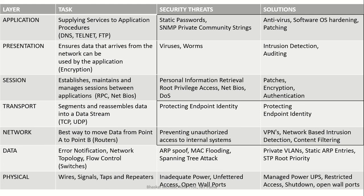Here you can see in a bit more detail the OSI model layers with their tasks, security threats, and solutions. The application layer provides services to application procedures like DNS, Telnet, FTP, etc. Security threats here include static passwords and SNMP private community strings.